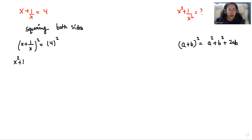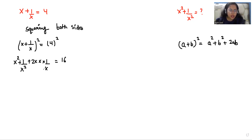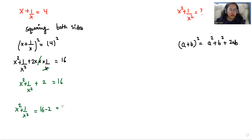So x squared plus 1 over x squared plus 2 times of x times of 1 over x is equals to 4 squared is 16. So here we can eliminate this x with this x. So x squared plus 1 over x squared plus 2 times 1 is 2, is equals to 16. So the value of x squared plus 1 over x squared is 16 minus 2, that is 40.